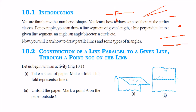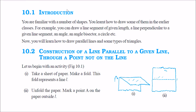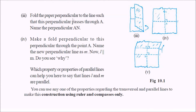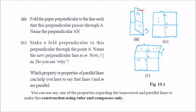Let us take a paper, make a fold, and give this fold the name L. So this is line L. Take any point A on the paper. Then again fold this paper passing through A, so that a line becomes a perpendicular bisector.